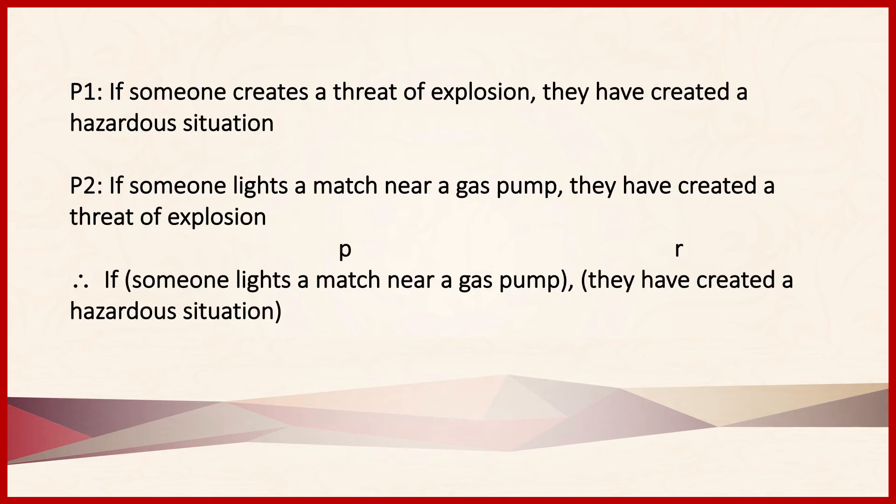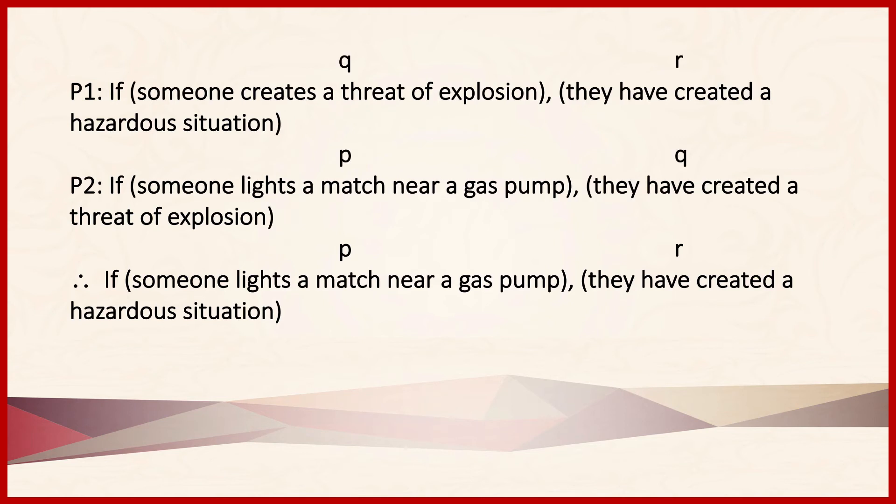Look, however, what happens if instead we begin by labeling the conclusion if P then R. Now we can go back, put parentheses around the antecedents and consequents of both of the premises, and label them accordingly. Now we have if Q then R, second premise if P then Q, conclusion if P then R.